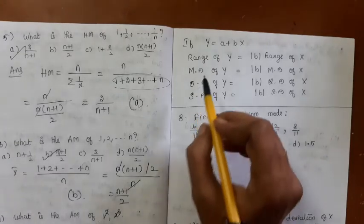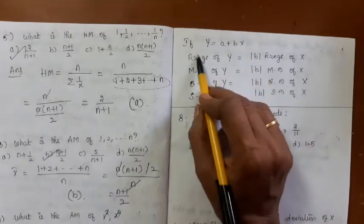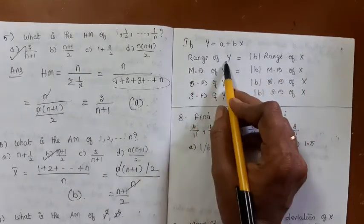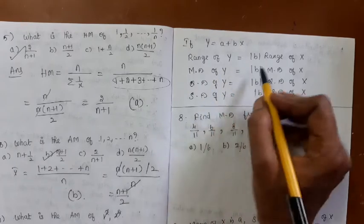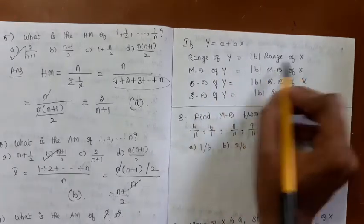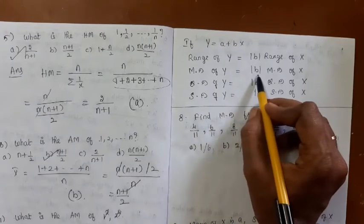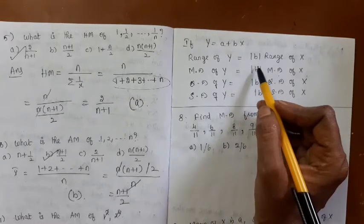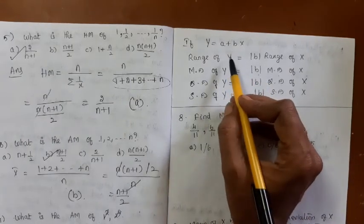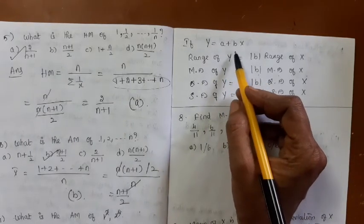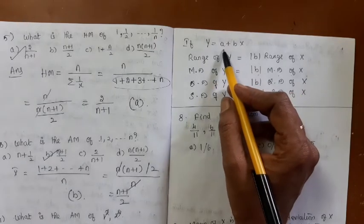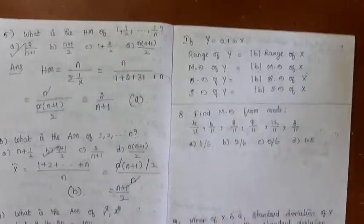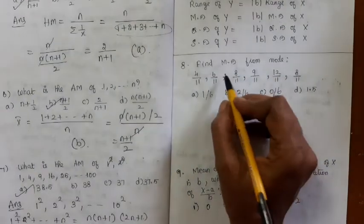In this video, we are going to consider relationships like y = a + bx. The range of y can be simply computed as |b| times the range of x; the mean deviation of y is |b| times the mean deviation of x. These are the properties of measures of dispersion, which say measures of dispersion are affected by the change of scale, not by the change of origin. These problems are based on these properties.